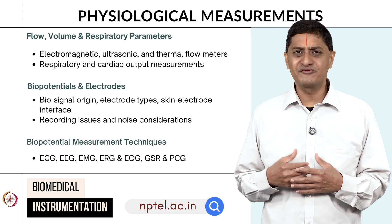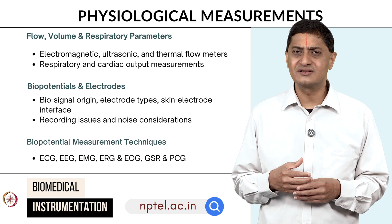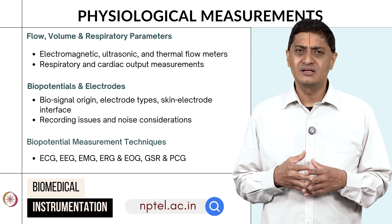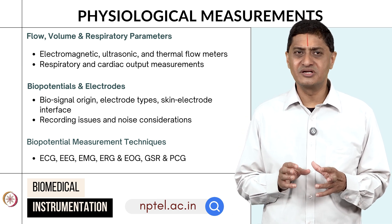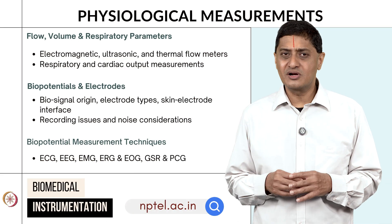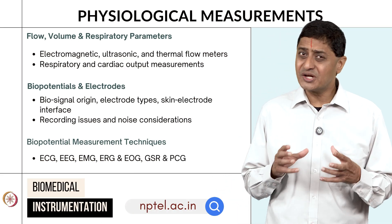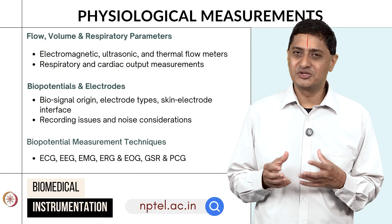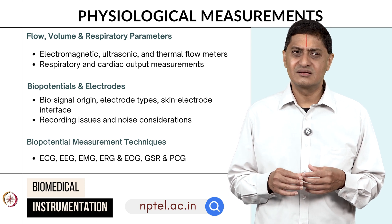Various types of flow measurements are possible — electromagnetic, ultrasonic, and thermal. Depending on the situation and the condition, the measurement will vary. Respiratory and cardiac output measurements are also covered; where you are applying will decide what instrument you use.